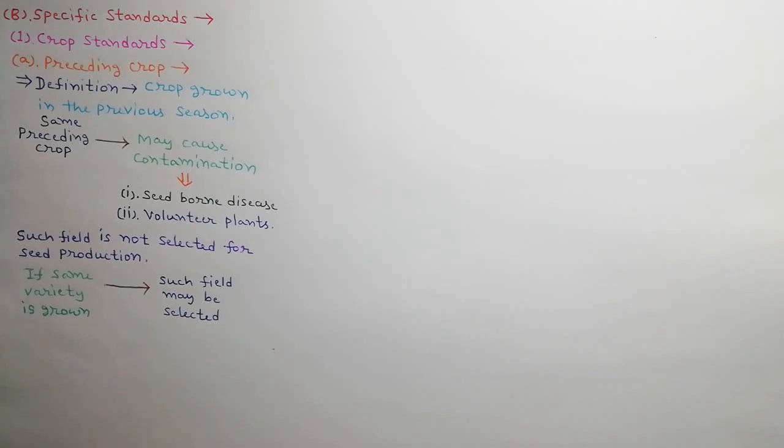In specific standards, first we will discuss crop standards. The crop grown in the previous season is called the preceding crop. To avoid contamination from the same preceding crop, the field selected for raising the seed crop must be free from seed-borne diseases and volunteer plants. Generally, such a field is not selected in which the same crop was grown in the previous season. In some cases, if the same variety was grown in the field and the seed crop met the prescribed certification standards for genetic purity and disease infection, such field can be selected.